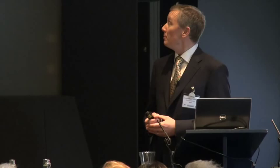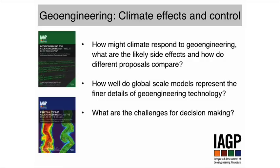I'm going to talk this afternoon about the climate modelling work that we've done under the IAGP project. With the climate modelling work, we set ourselves three different kinds of questions. The first one was to look at likely side effects of geoengineering, but in a different approach to the SPICE project — we were going to look at a number of different alternative potential geoengineering technologies, using a consistent modelling approach so we could compare one against another.